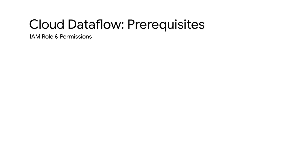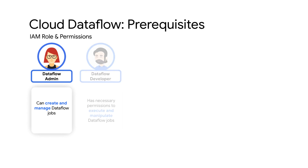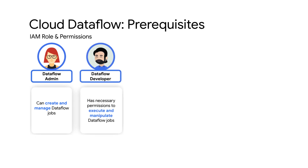Now let's cover IAM roles for Dataflow. Roles are used to limit access for users within a project or organization and provide better control on access to Dataflow-related resources. Dataflow admin is the minimum role required for creating and managing Dataflow jobs. In addition, it provides machine type and storage bucket configuration access. Dataflow developer provides the permissions necessary to execute and manipulate Dataflow jobs.